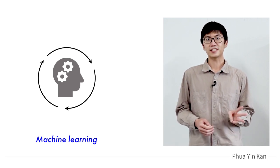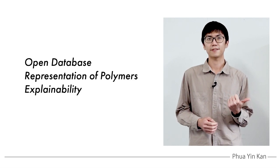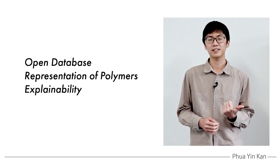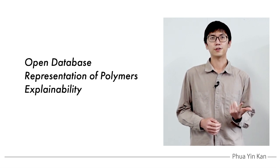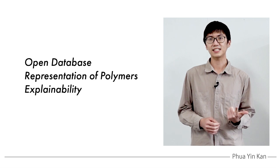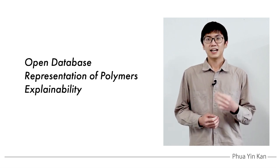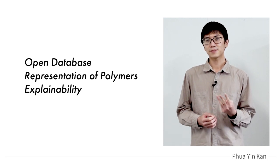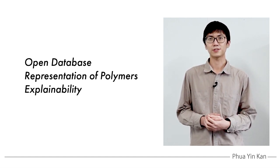This is due to three reasons. First, open databases for fuel cell materials, which is the foundation for machine learning, is currently unavailable. Secondly, there is a lack of know-how to represent the complexity of polymers in a way that machines could understand. Third, the lack of explainability of machine learning models gives black box problems to researchers.